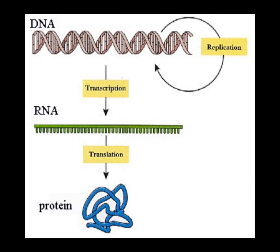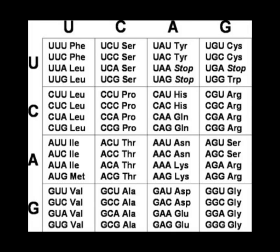There are far more combinations of A, T, C, and G than there are possible amino acids. As such, several codons will code for a single amino acid. For example, CCT, CCC, CCA, and CCG all code for the same amino acid — proline. This is called the redundancy of the genetic code. It's important because often it's just the last letter that changes. Essentially, anything with CC-blank is going to make proline. This is the foundation of the wobble hypothesis — look it up if you want a deeper read.